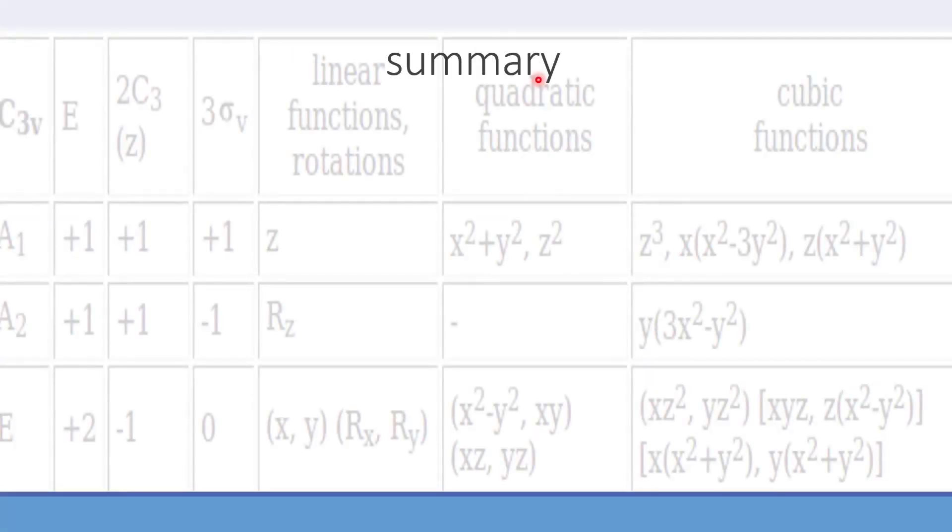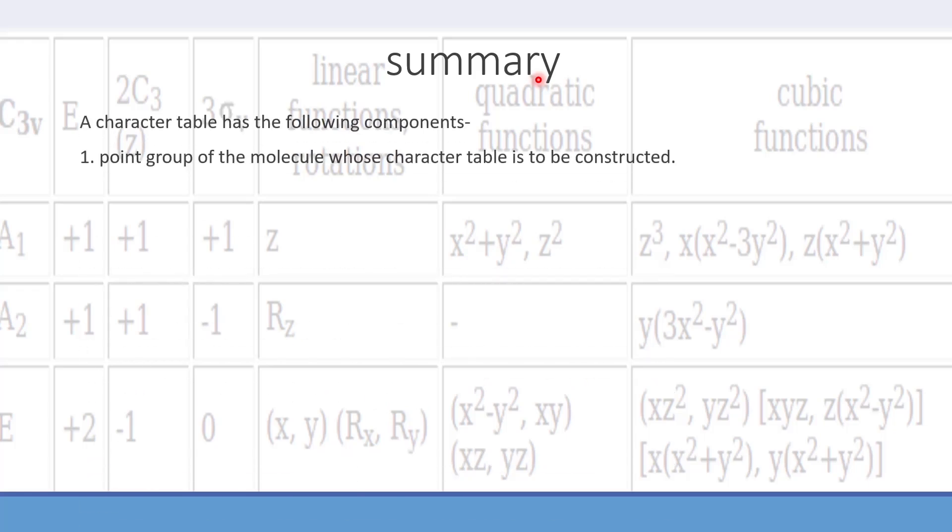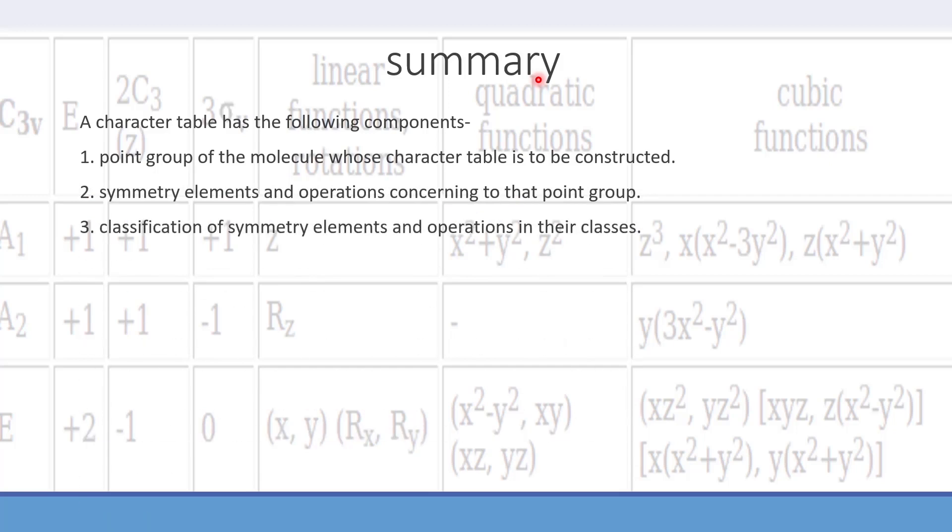This is how you can talk about the character table in part. In the next part we will talk about the remaining things that are very important again. But before winding up the work, we have to describe the summary. A character table has the following components. First, point group of the molecule. Number two, symmetry elements and operations. Number three, classification of symmetry elements and operations in their classes. Even if you don't know about it mathematically, we can just by observing, you can find out the classes. Number of classes gives number of irreducible representation.